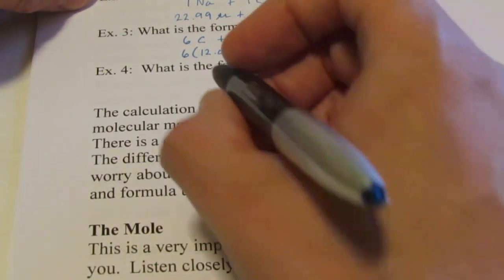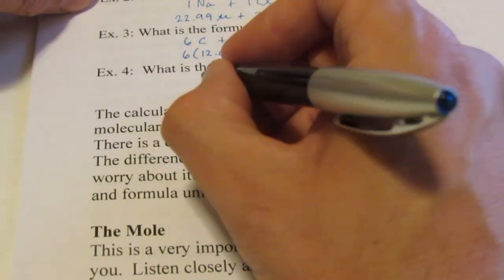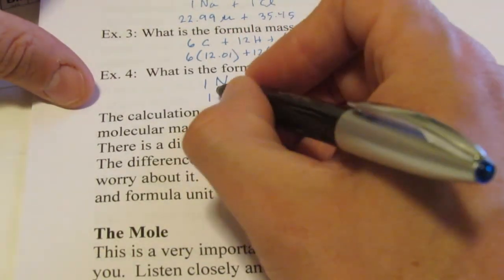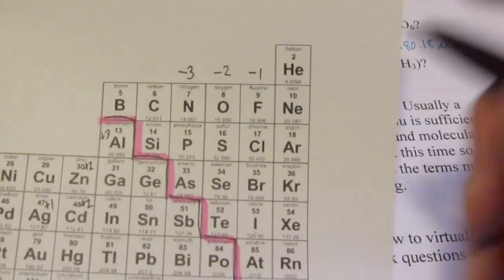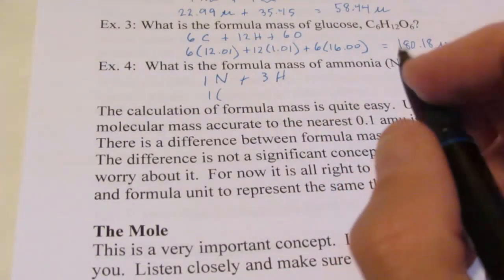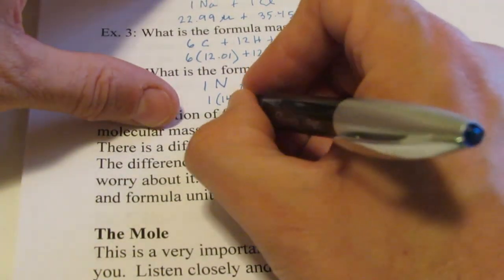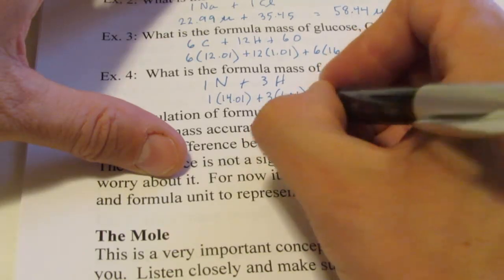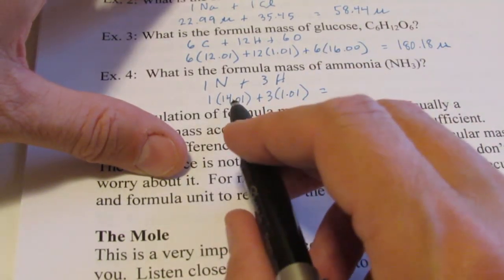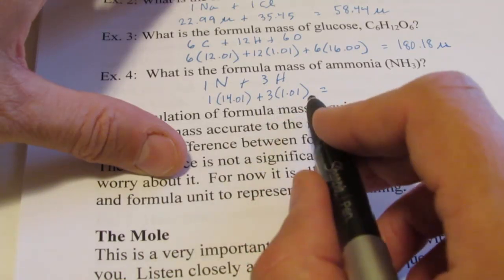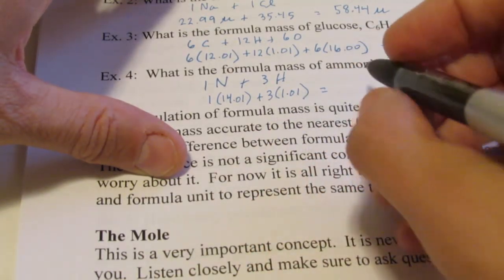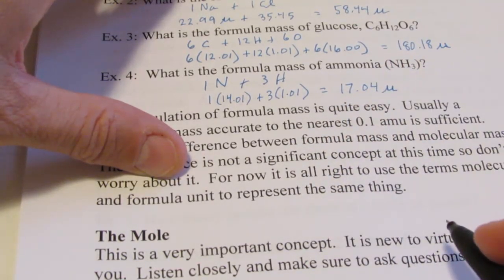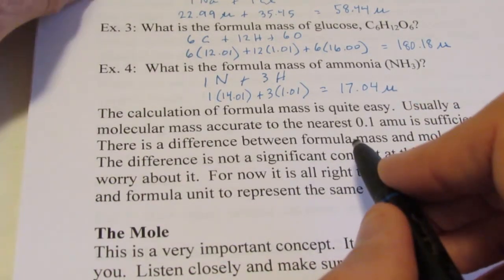How about the formula mass of ammonia, NH3? We have one nitrogen atom and three hydrogen atoms. Nitrogen's mass is 14.007, so to the nearest hundredth that's 14.01, plus three times 1.01 for hydrogen, giving 3.03. So 14.01 plus 3.03 equals 17.04 atomic mass units.